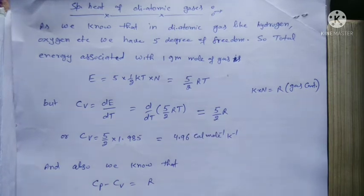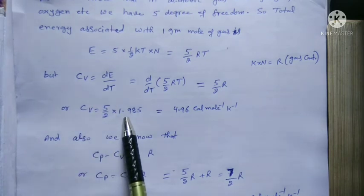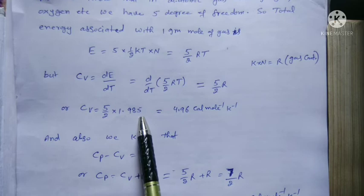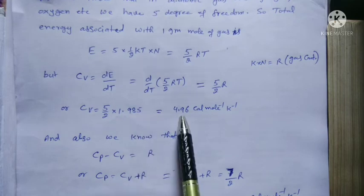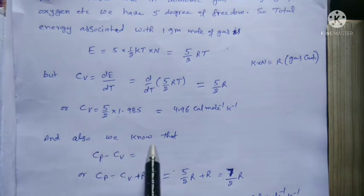So Cv is equal to (5/2)R. Substituting the value of R as 1.985, we get 4.96 calories per mole per Kelvin.